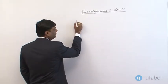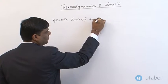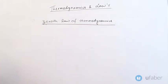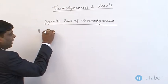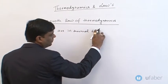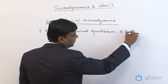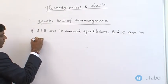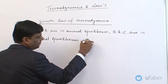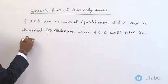Next, zeroth law of thermodynamics. Zeroth law of thermodynamics: if A and B are in thermal equilibrium, B and C are in thermal equilibrium, then A and C will also be in thermal equilibrium.